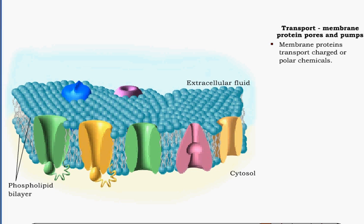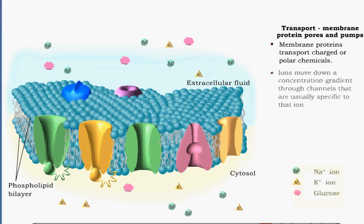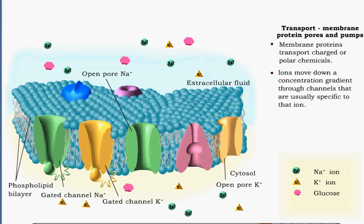Membrane proteins are needed to transport charged or polar chemicals. Ions move across the plasma membrane through water-filled, hollow proteins. These channels come in two forms that allow movement down a concentration gradient: pores that are always open, and gated channels that are able to open or close.